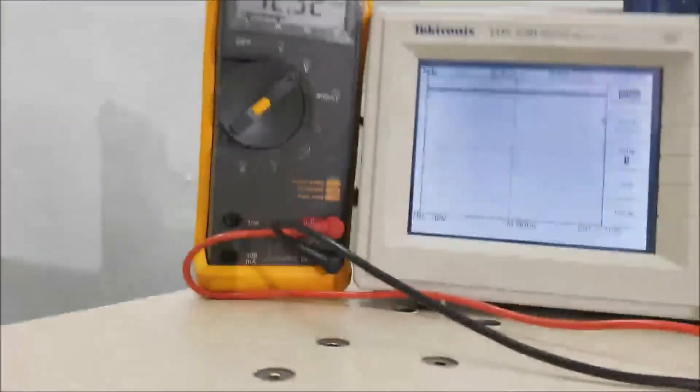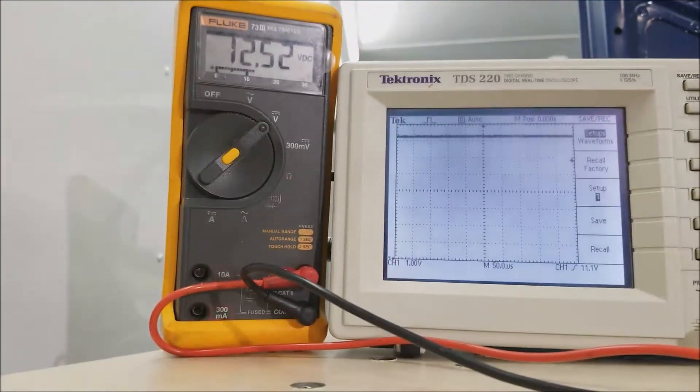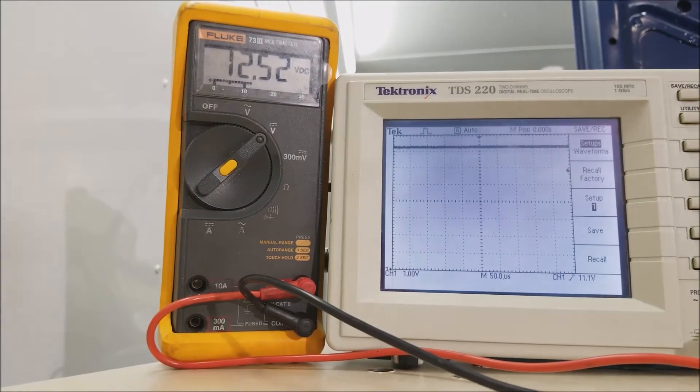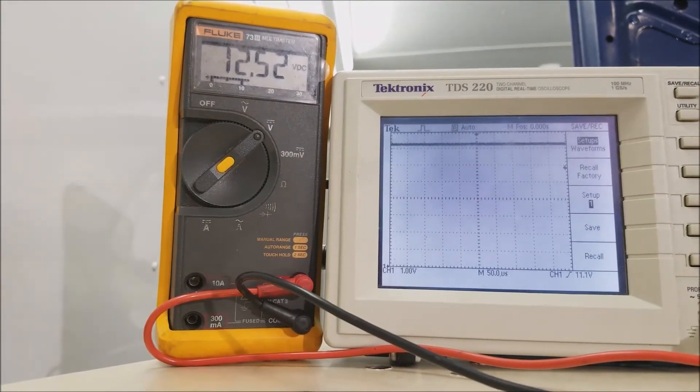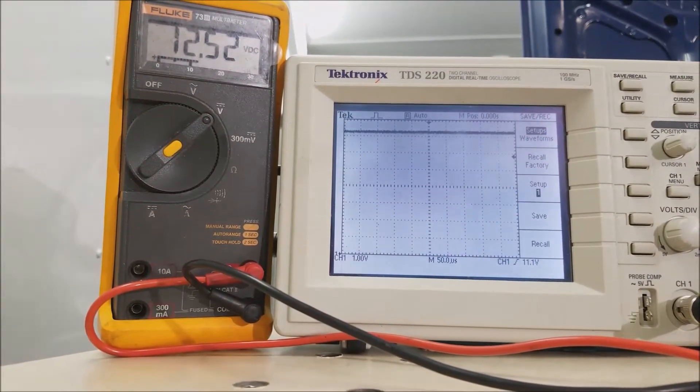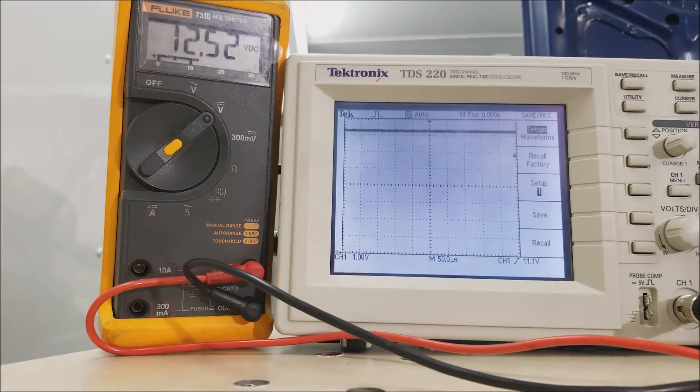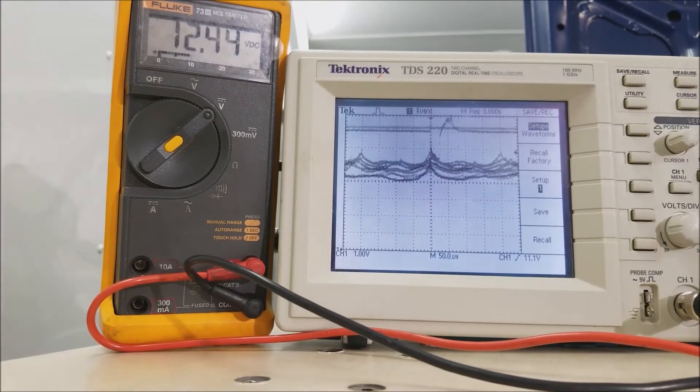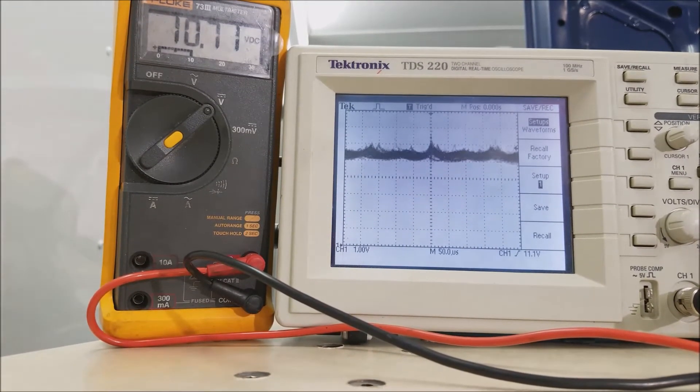What we're going to do is watch the voltage drop as the motor cranks. I have a Fluke, it's measuring 12.52 volts right now. And you can see on the scope at the top, as I crank, you can see the pattern.